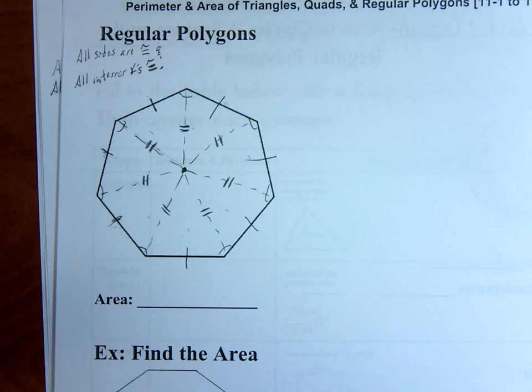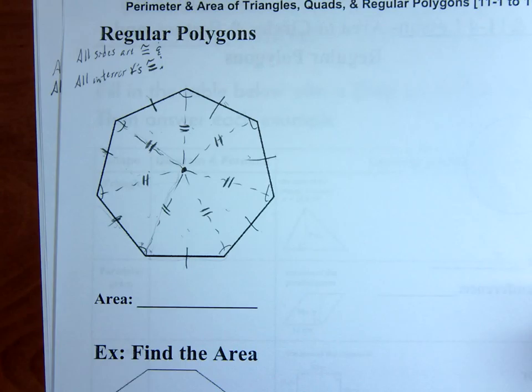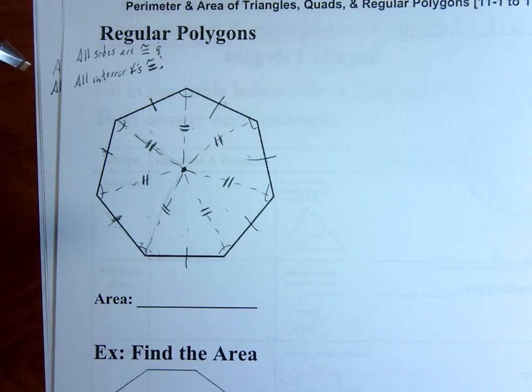So if they're isosceles triangles, that means these base angles are congruent, which means these angles must be congruent to each other. So therefore, what happened to my interior angle when I drew this line in? It's been bisected. It's a useful piece of information if we want to find out what that angle is. We can find the interior angle and just cut it in half.